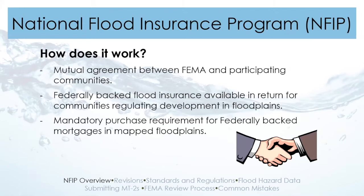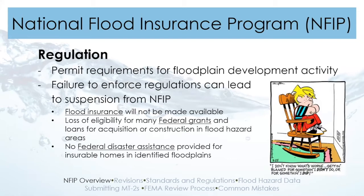Getting started with the NFIP overview — how does it work? The NFIP is a mutual agreement between FEMA and communities where federally backed flood insurance is available in return for communities regulating floodplain development. That comes with the mandatory purchase requirement for federally backed mortgages in mapped floodplains. Permits are required for any floodplain development activities, and failure to enforce NFIP regulations can lead to suspension from the NFIP, flood insurance not being made available, and loss of federal grants and eligibility.